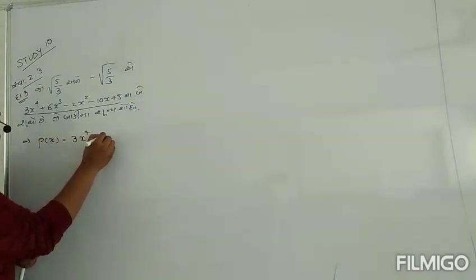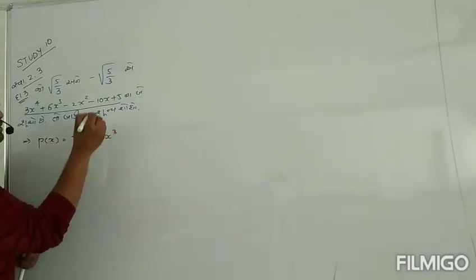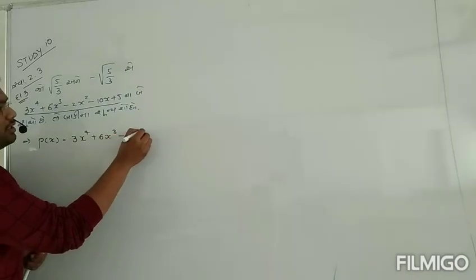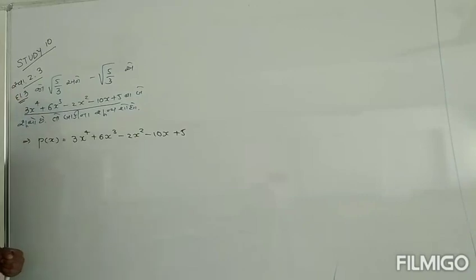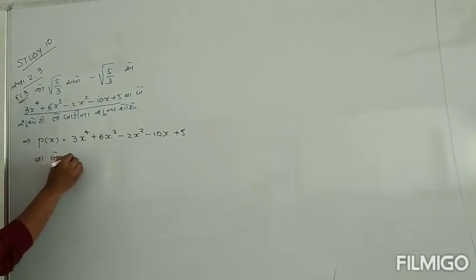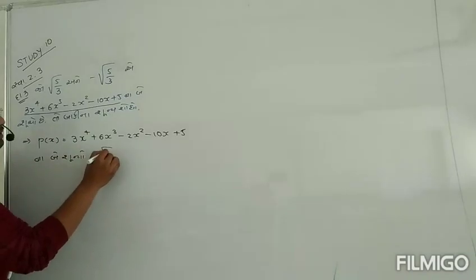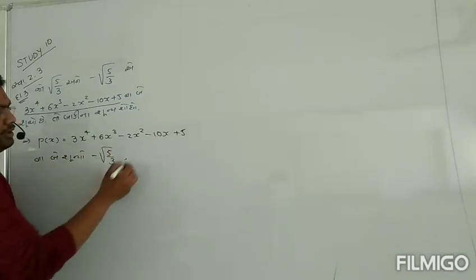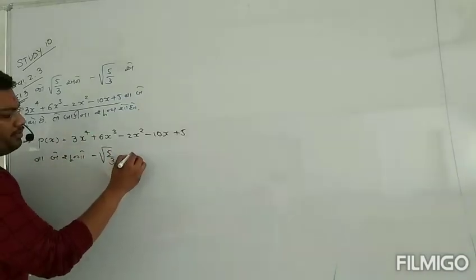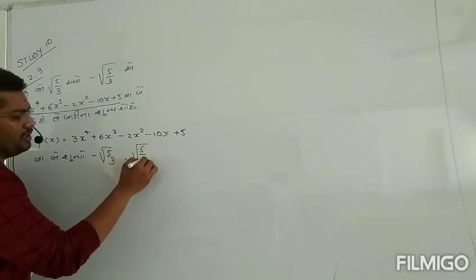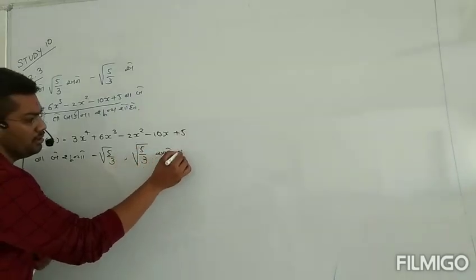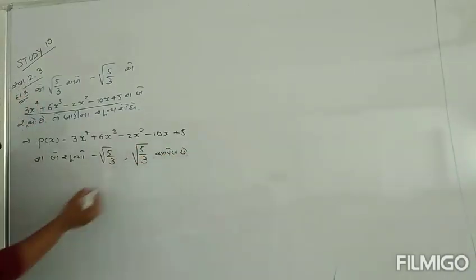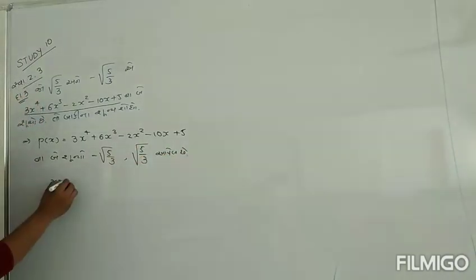3x is 4x. 4x is 5x. 2x is 5x minus x plus 5x. This is a lot. This is a base. Minus 5x by root 3, and under root 5x. This is a base. So this is not x. This is a base.